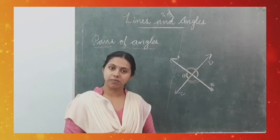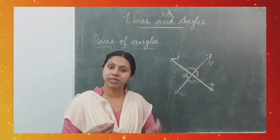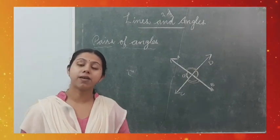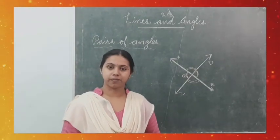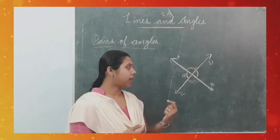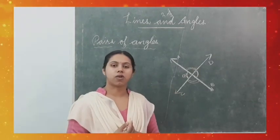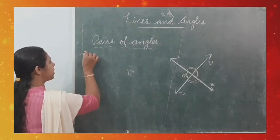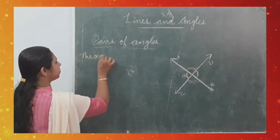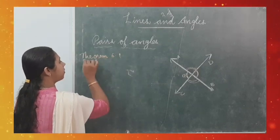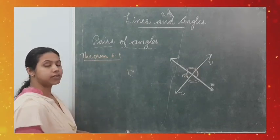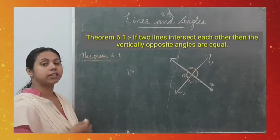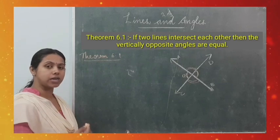Now we can prove this statement, so it is known as a theorem. Theorems are statements which are proved using definitions, axioms, or previously proved statements. So the first theorem in this chapter is Theorem 6.1: when two lines intersect each other, the vertically opposite angles are equal.